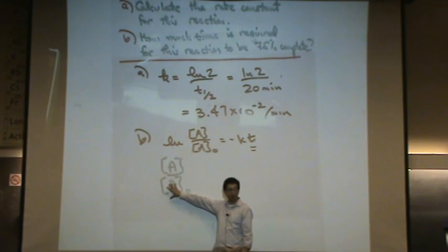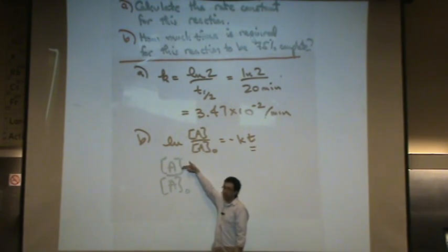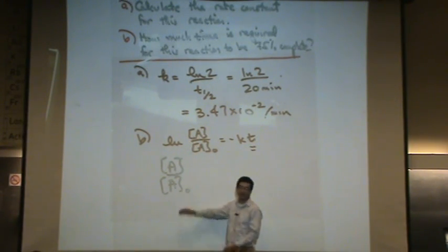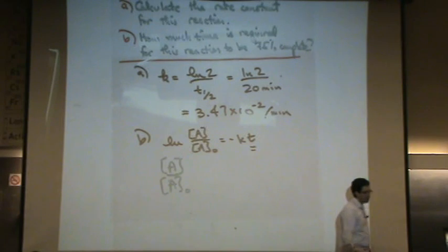This is the initial amount, so it's the total. This is how much you have at time t, how much actually exists at time t. So this is the amount left over at time t. So if it's 75% complete, what percent is left over?